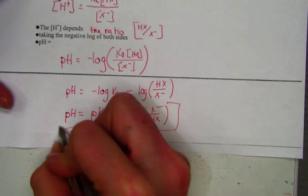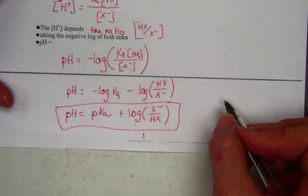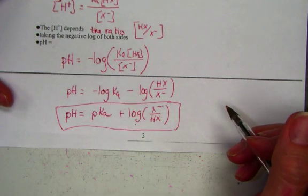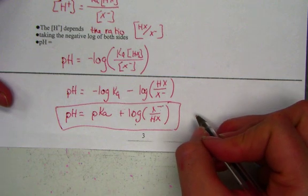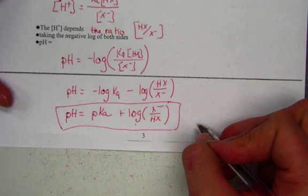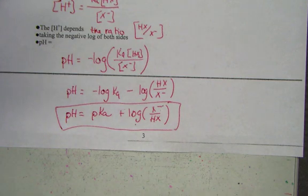This is a very famous equation for buffered systems, and I believe it actually appeared this year on the AP exam. It's known as the Henderson-Hasselbalch equation. Let's take a closer look at this equation on the next page.